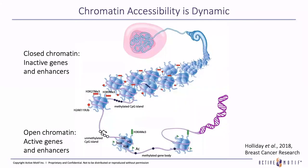So first, how is chromatin organized? The chromatin state, whether it's open or closed, is controlled by epigenetic modifications. These post-translational modifications to the histones or to the DNA itself change the shape of the chromatin — to open, active genes and enhancers, or closed, inactive genes and enhancers.